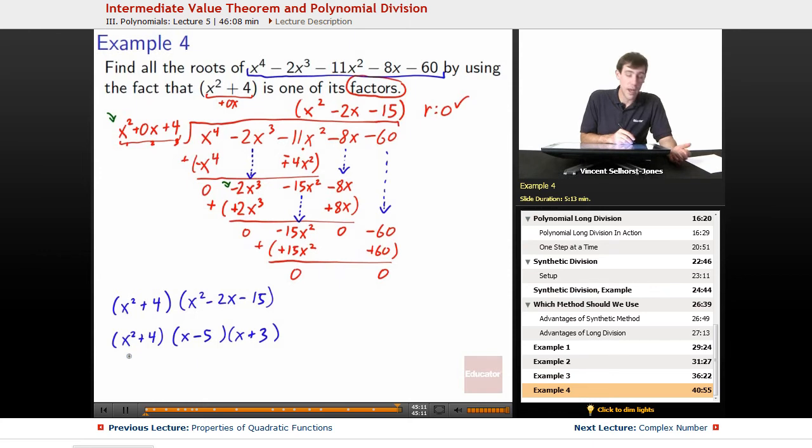So at this point we set everything to 0. x^2 + 4. That will provide no answers. So x^2 + 4 = 0. Nothing there. You know, there's no answers there. x - 5 = 0.